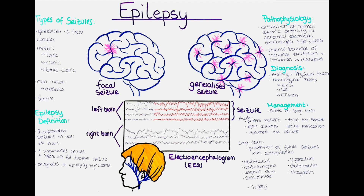The first step in the diagnosis of epilepsy is taking a comprehensive medical history, including the patient's symptoms and any triggers that may be associated with the seizures. Patients should be asked about the type, frequency and duration of their seizures, as well as any aura or warning signs that may precede them. It is also important to inquire about any family history of seizures or other neurological disorders, and any prior head trauma or infections. A physical examination should be performed to assess the patient's neurological function and rule out other causes of seizures.